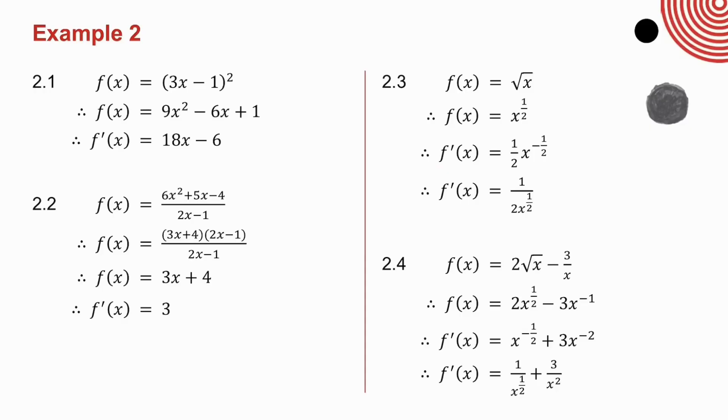2.4, 2 root x is 2x to the half. 3 over x is 3x to the minus 1. A half times 2 is 1x to the minus a half. Minus 1 times minus 3, plus 3x to the minus 2. And then I sort out my negative exponents. Again, have a good look at where my notation changes. It becomes f dash x on the step when I do the derivative.